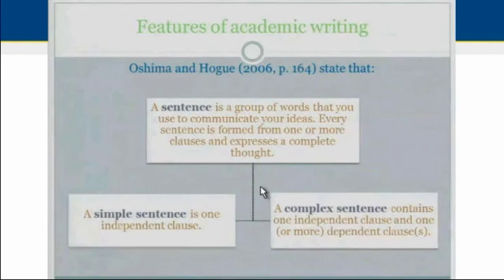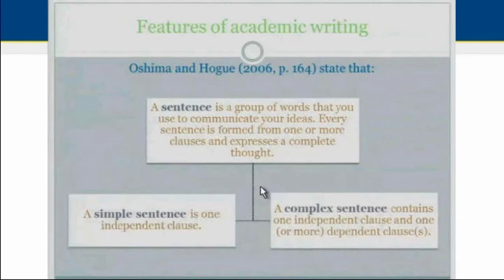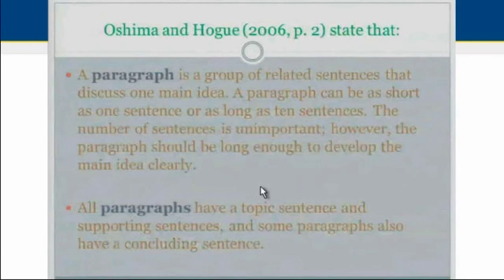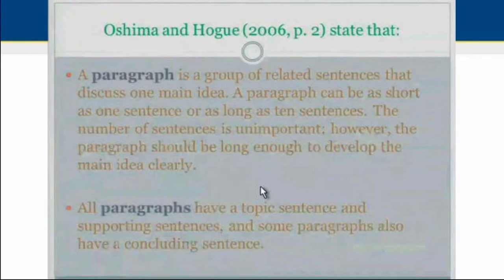Simple sentences are easier to write and read, but longer sentences are also needed when writing academically. Students should avoid writing very lengthy sentences until they feel confident in their ability. Sentences are part of paragraphs. A paragraph is a group of related sentences that discuss one main idea. It can be as short as one sentence or as long as ten sentences. The number of sentences is not the important issue; however, the paragraph should be long enough to develop the main idea in a clear way.